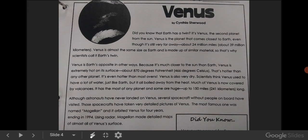Venus. Did you know the Earth has a twin? It's Venus, the second planet from the Sun. Venus is the planet that comes closest to Earth, even though it's still very far away. About 24 million miles, or 39 million kilometers.